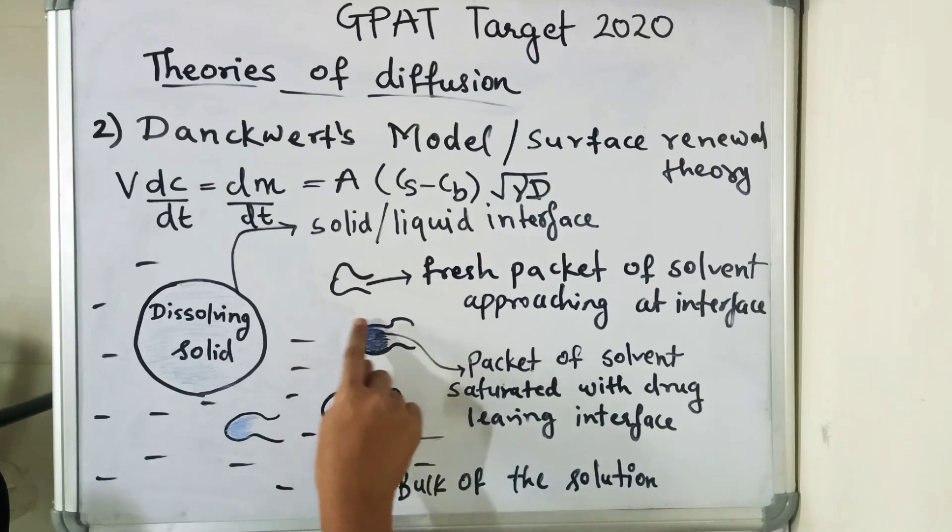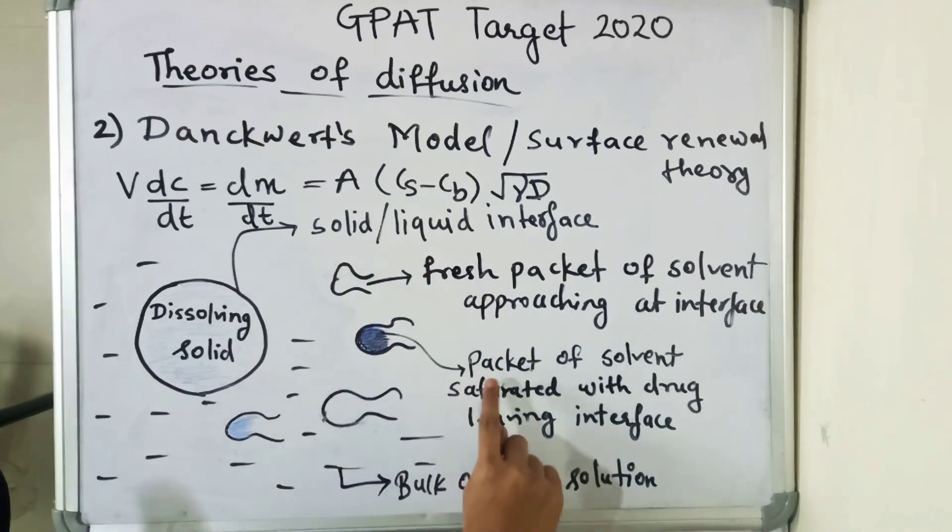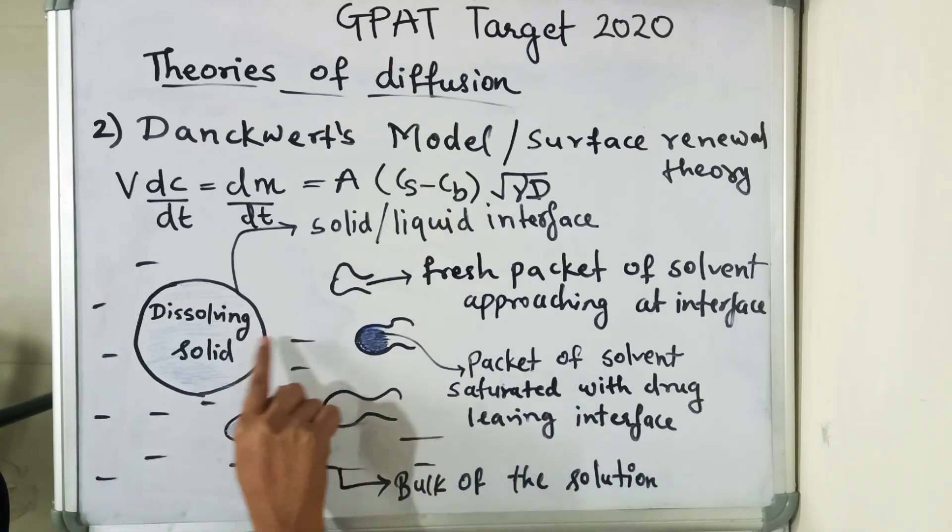This is a fresh packet of solvent approaching at the interface. This is the packet of solvent saturated with drug leaving the interface. This is the bulk of the solution.